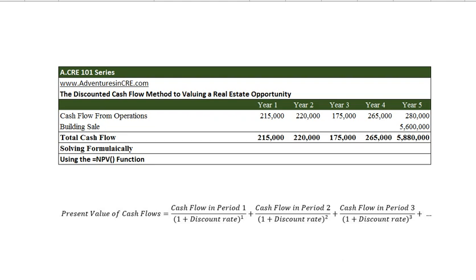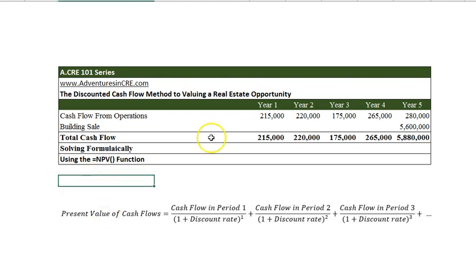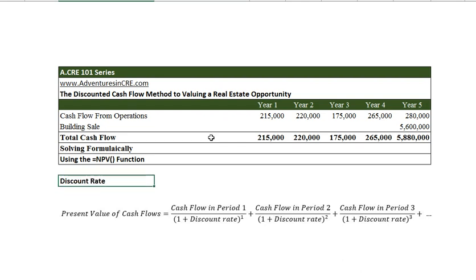In this example we have a property that an investor is looking at to hold for five years, and wants to come to a purchase price so that he or she will make an 8% return with the projected cash flows. That 8% is referred to as our discount rate, and let's put that in the model here.